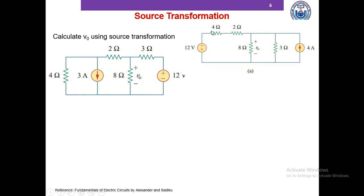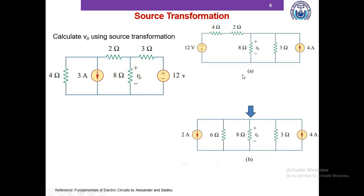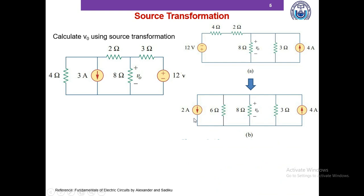This 4 ohm resistor and 2 ohm resistor are in series, so we can combine them into one 6 ohm resistor and then take source transformation again. Doing that, we get a current source of 12 divided by 6, which is 2 ampere, with the 6 ohm resistor in parallel, and the rest of the circuit remains the same as figure A.